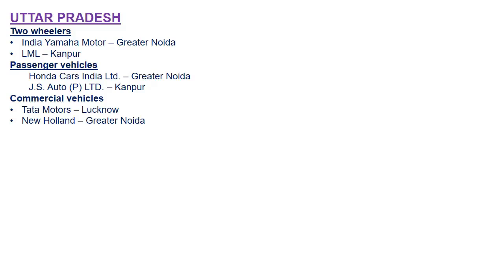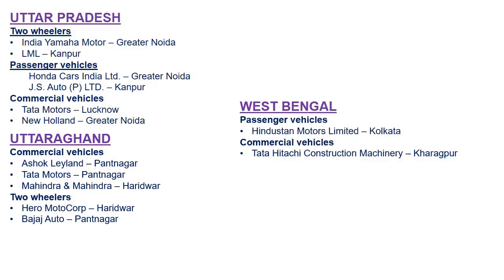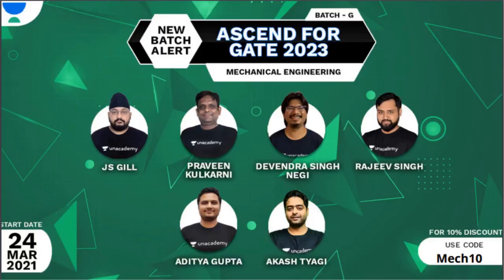In Uttar Pradesh, the two-wheeler section is at Greater Noida and Kanpur, the passenger vehicle section is at Greater Noida and Kanpur, and commercial vehicles like Tata Motors and New Holland are at Greater Noida and Lucknow. Uttarakhand also has many plants as shown on screen. In West Bengal, the passenger vehicle section includes Hindustan Motors Limited in Kolkata, and the commercial vehicle section has Tata Hitachi Construction Machinery at Kharagpur.